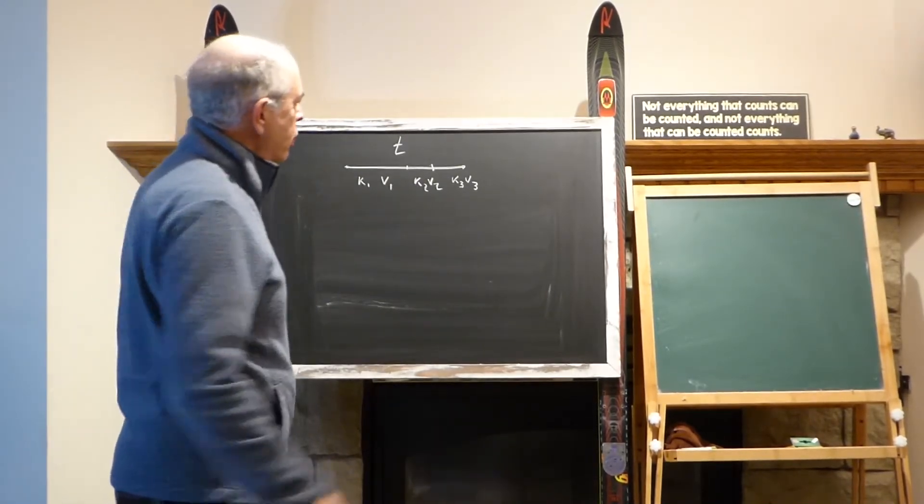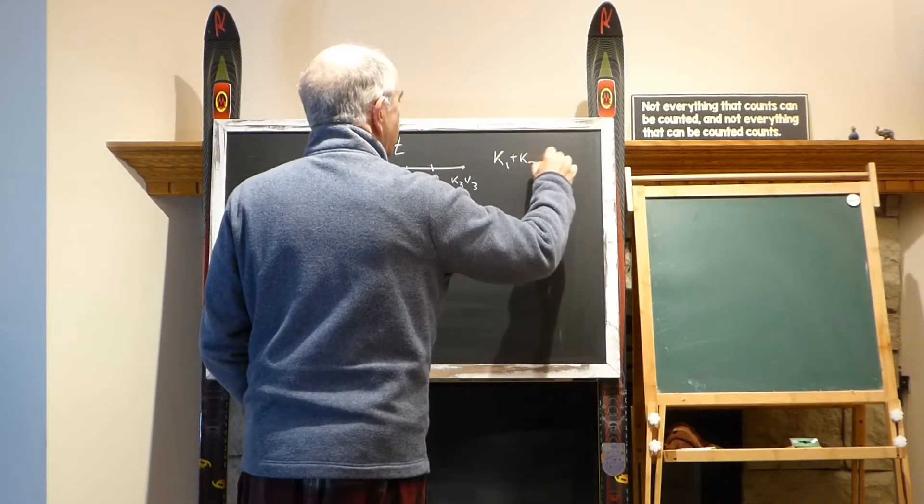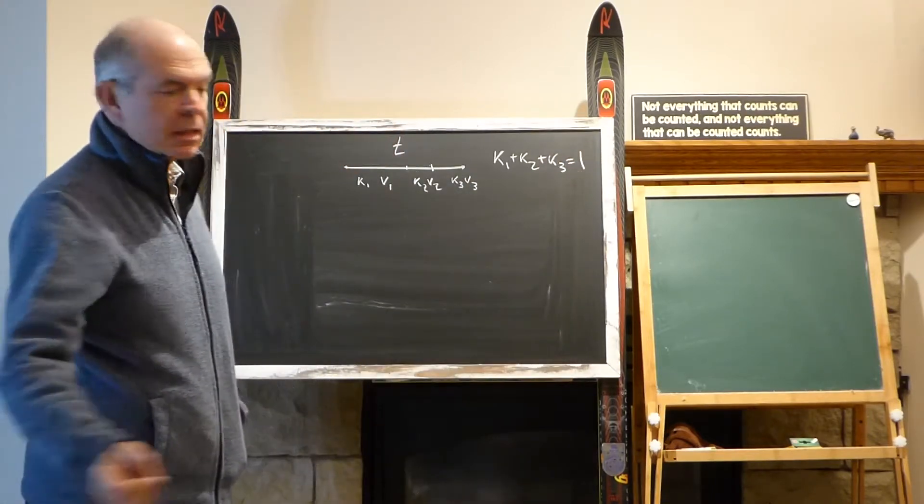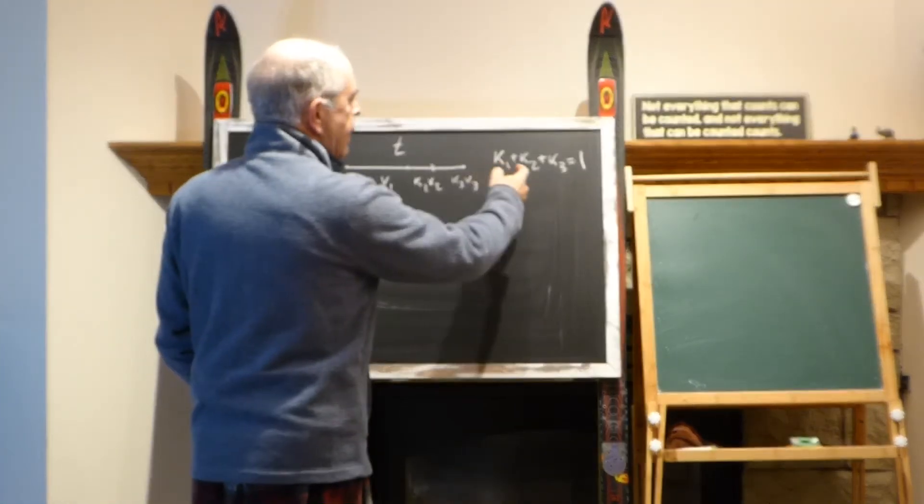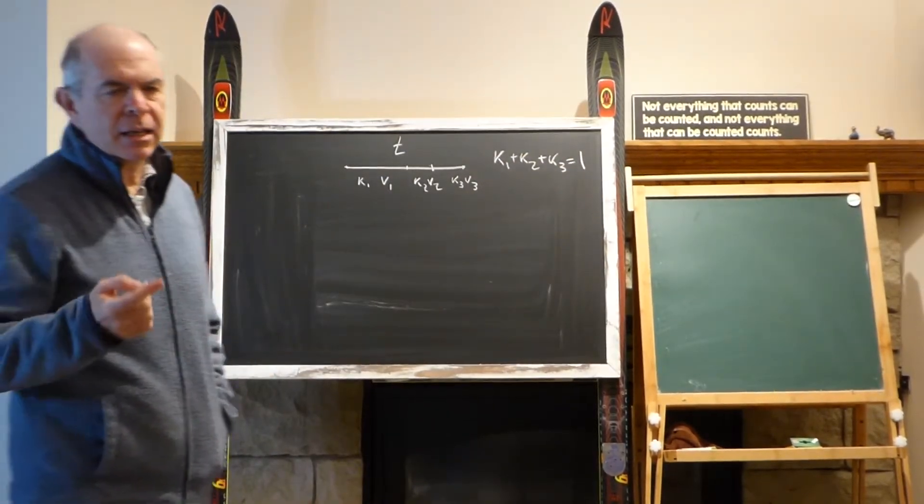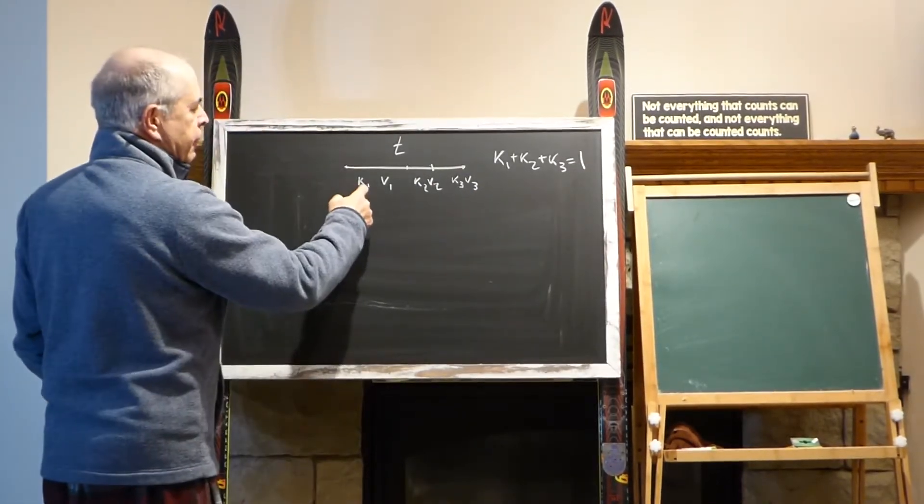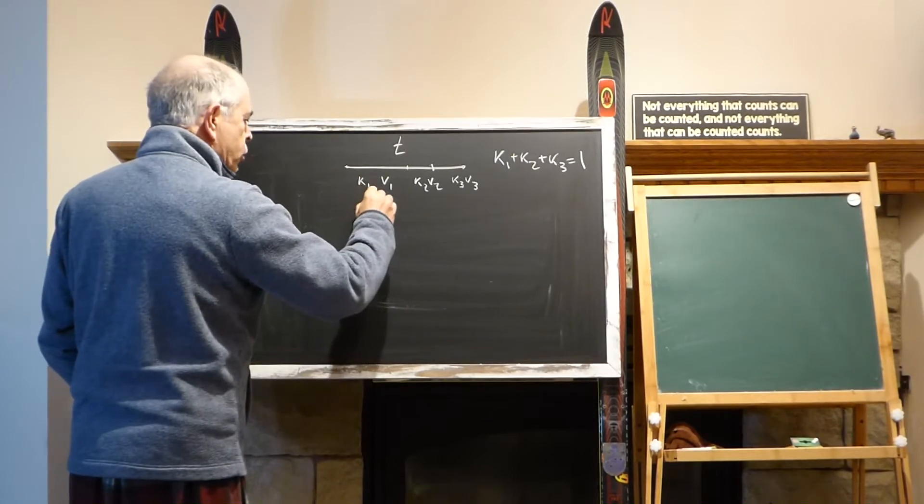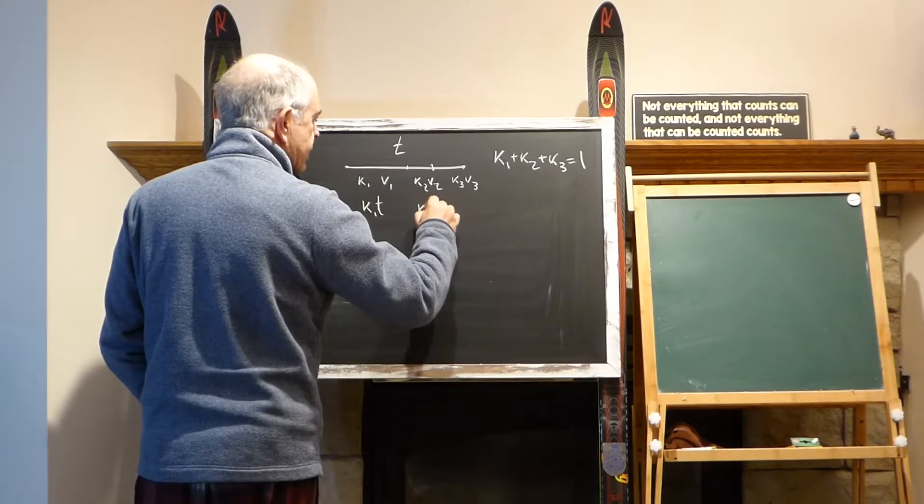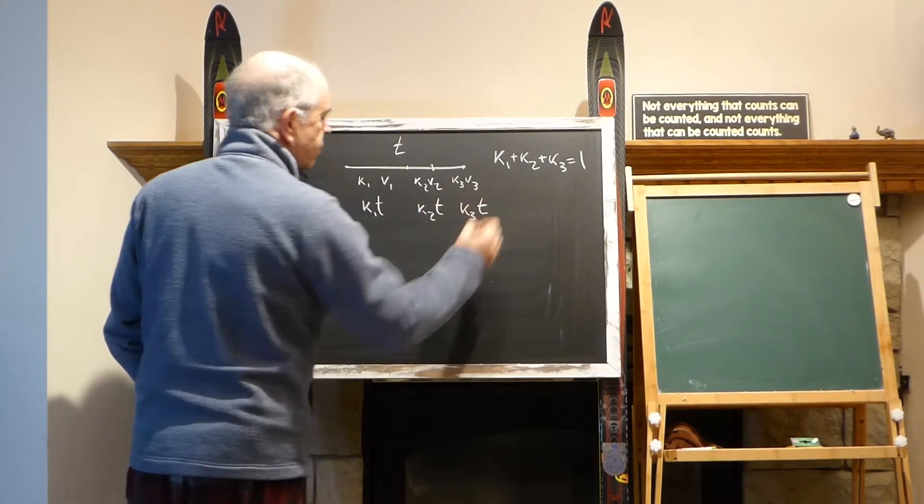Another thing I want to mention is that k1 plus k2 plus k3 equals 1. In this particular case, 0.9, 0.05, and 0.05 all together is the same as 90%, 5%, and 5%. If this is the proportion of the time, then the time itself is k1*t, this time is k2*t, and this time is k3*t.